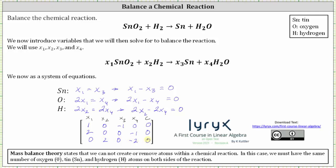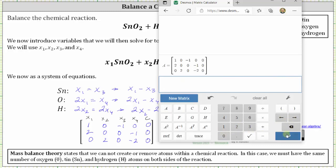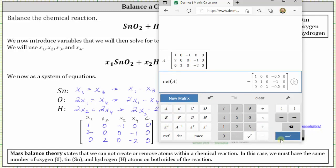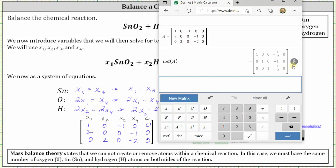Now we want to write the augmented matrix in reduced row echelon form, which we will do using technology. We will use the Desmos matrix calculator. Then click RREF, select matrix A and enter. Let's click the convert to fraction button on the far right. And now we have the augmented matrix in reduced row echelon form. Let's copy this over to our work.